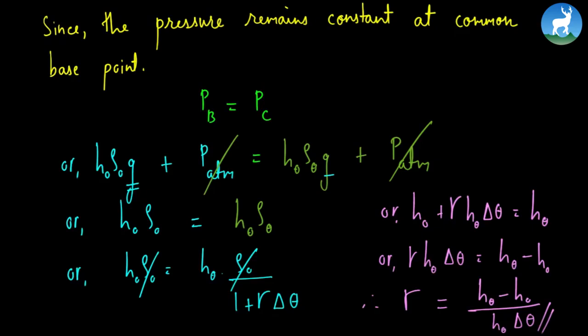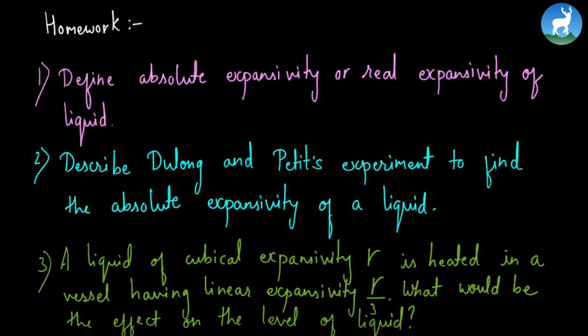For today's homework: First, define absolute expansivity or real expansivity of liquid. Second, describe Dulong and Petit's experiment to find the absolute expansivity of a liquid. Third, a liquid of cubical expansivity γ is heated in a vessel having linear expansivity γ/3. What would be the effect on the level of liquid?